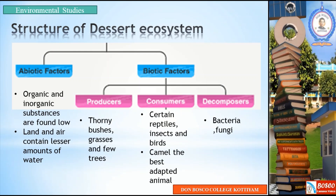Now let us look into the structure of the desert ecosystem. A desert ecosystem can be divided into two: biotic factors and abiotic factors. Under the abiotic factors, organic and inorganic substances are found. Land and air contain a lesser amount of water in a desert ecosystem.